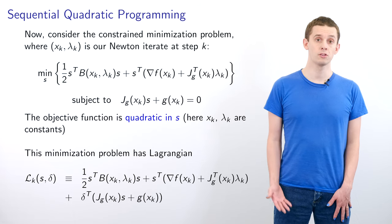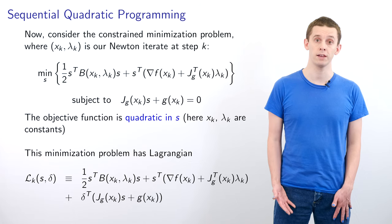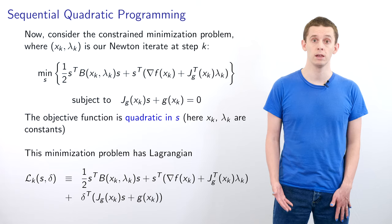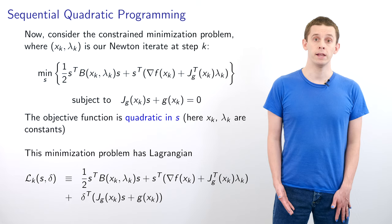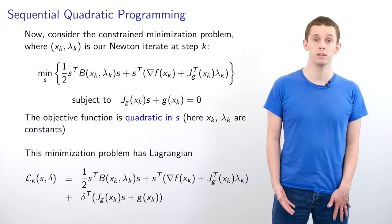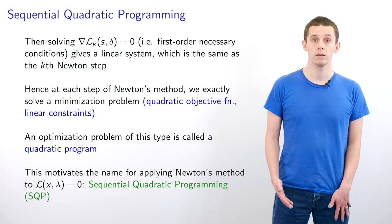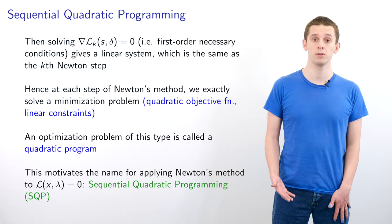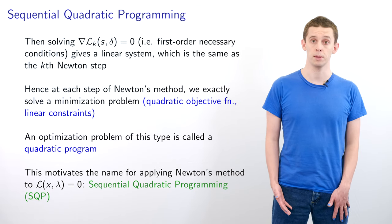We could solve this system by writing a Lagrangian L_k(s, δ). Here δ are the Lagrange multipliers that we would need in order to impose the linear constraints. We could go ahead and solve this by calculating the gradient of L_k and setting it to 0. If we do this calculation then we'll find that we get the exact same system to solve as in the Newton method at step k.